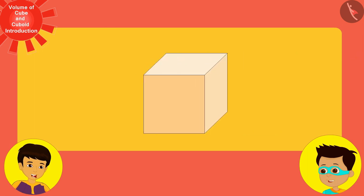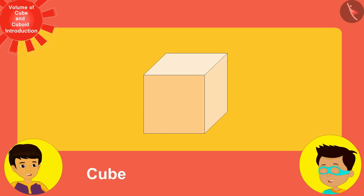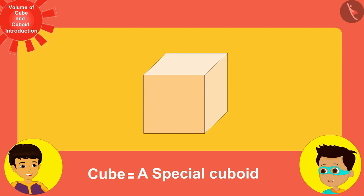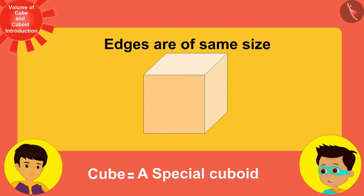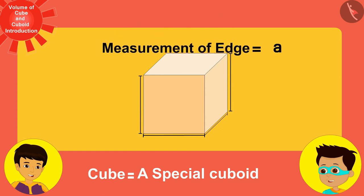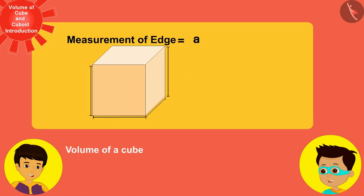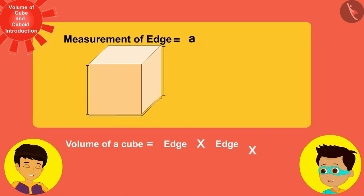Now let's look at this cube shaped paper packet. Every cube is a special type of cuboid — it is special because all of its edges are of the same size. So if we assume that every edge of this cube shaped paper packet has a measure of a, we get the formula for the volume of a cube: a³.